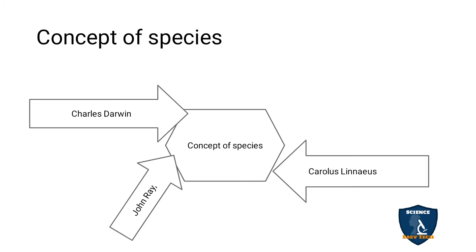Before we begin, we must know what a species is, as you have studied classification. The species is the basic unit of classification. Scientists like John Ray, Carolus Linnaeus, and Charles Darwin all discussed the concept of species at the basic level.